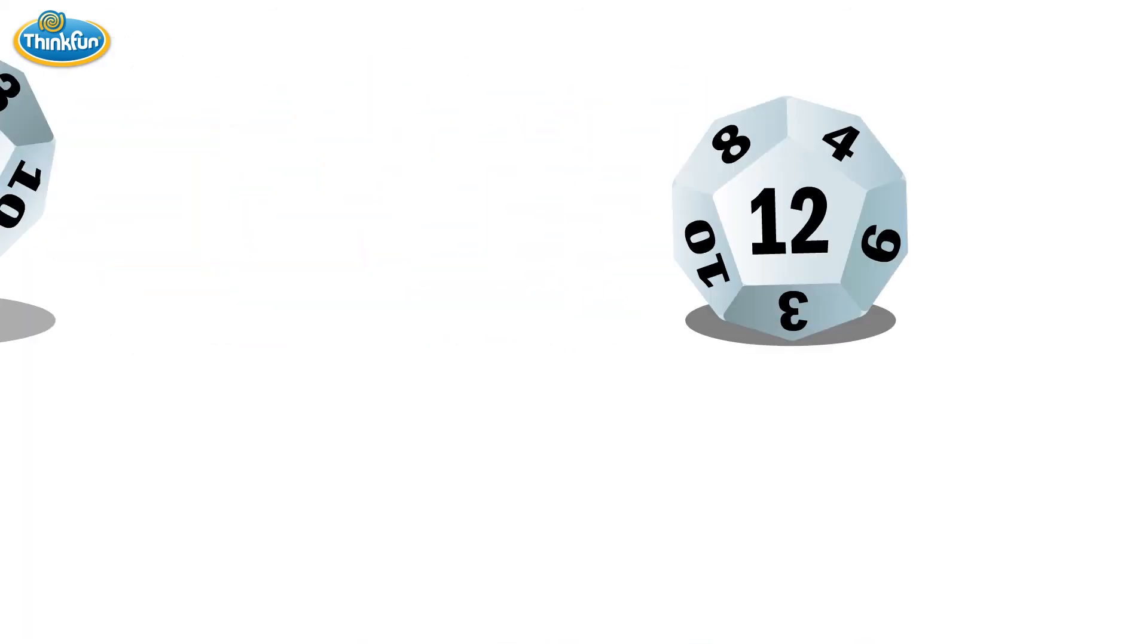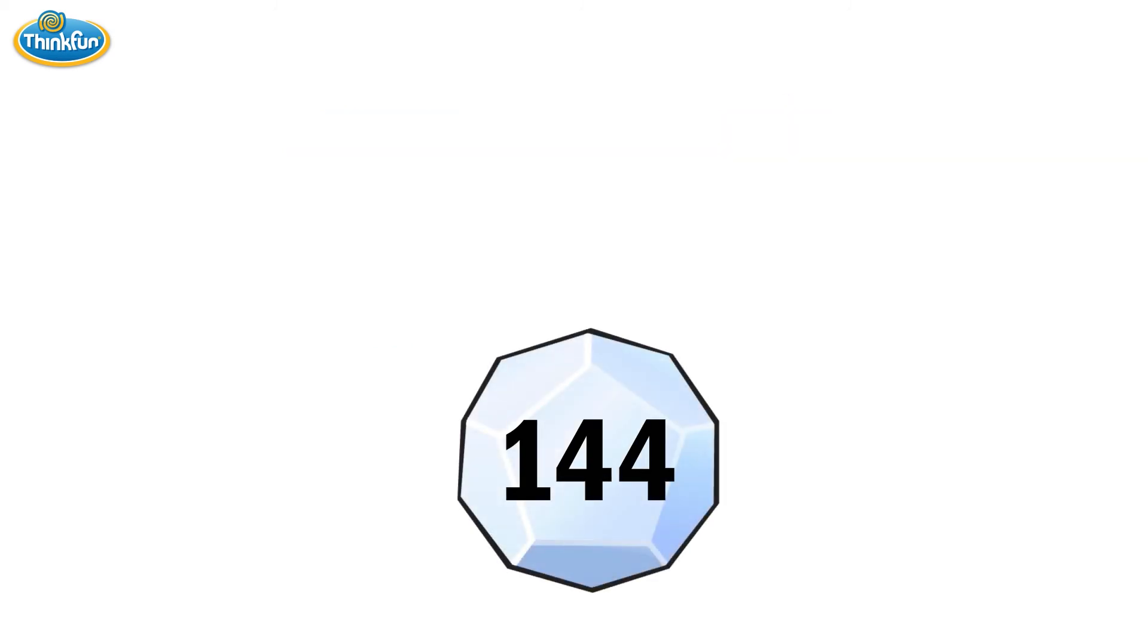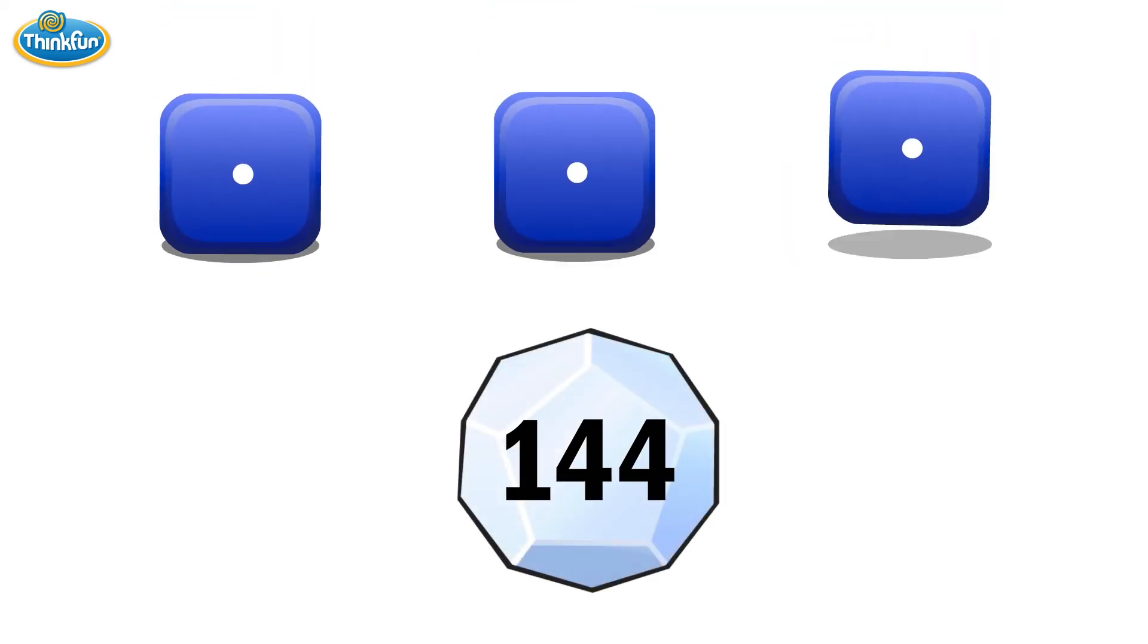Let's see this in action. Let's say we roll the two target dice and get two 12s. Let's multiply them to get a target of 144. Now let's roll the scoring dice. We've rolled three ones. What answers can we get?